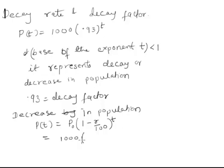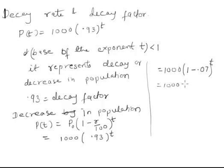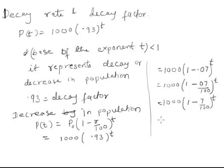So p(t) equals 1000 times 0.93 raised to t can also be expressed as 1000 times 1 minus 0.07 raised to t, which is 1000 times 1 minus 7 over 100 raised to t. Comparing with the standard formula, r equals 7, so the decay rate is 7%.